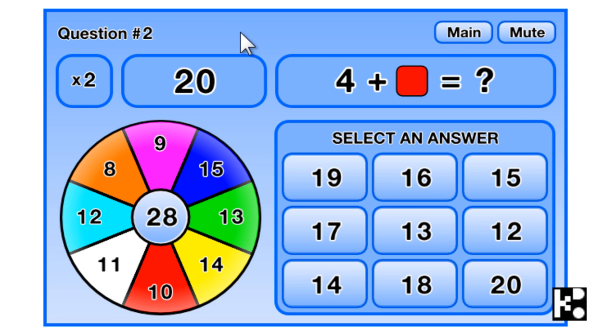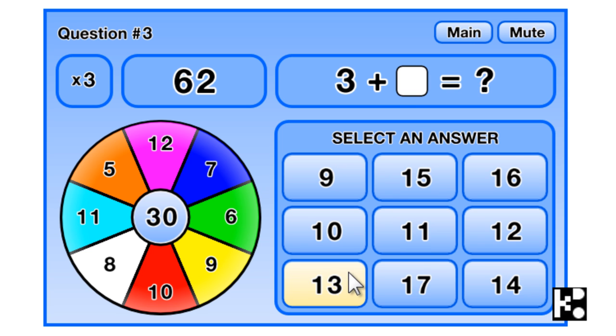OK, correct, and you got 20 marks times 2. And then red is 10, 4 plus 10 is 14. So you got 62 marks.